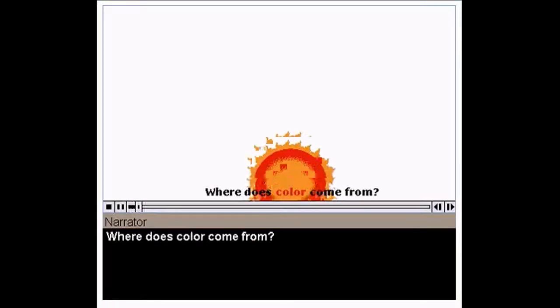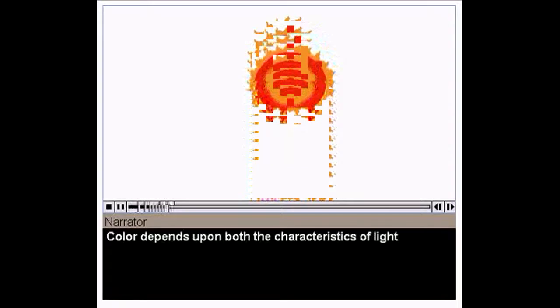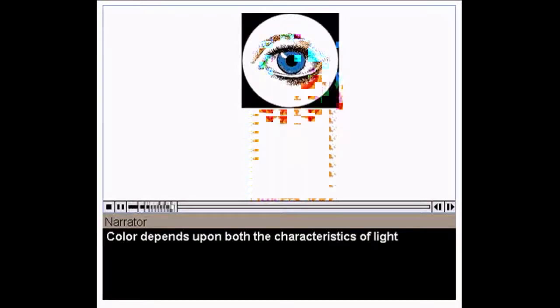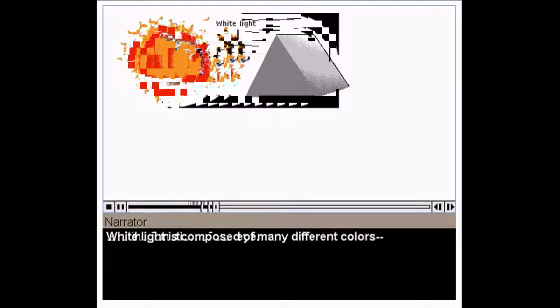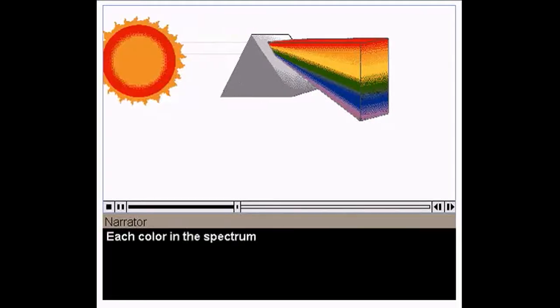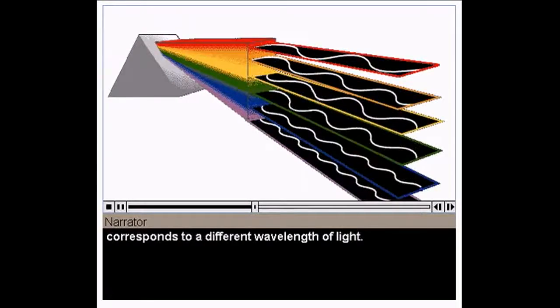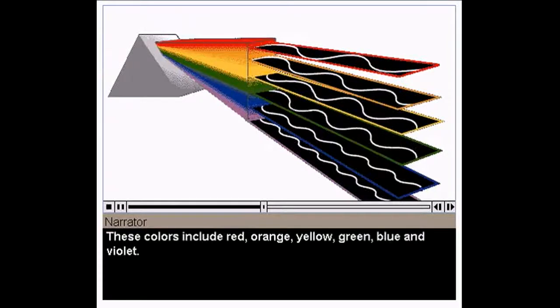Where does color come from? Color depends upon both the characteristics of light and the function of our eye. White light is composed of many different colors, the colors of the rainbow. Each color in the spectrum corresponds to a different wavelength of light. These colors include red, orange, yellow, green, blue, and violet.